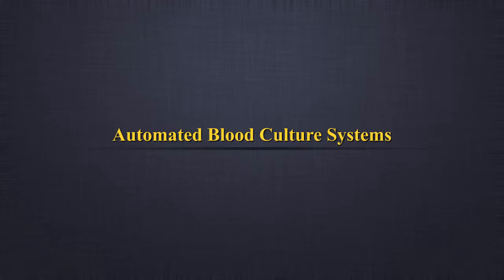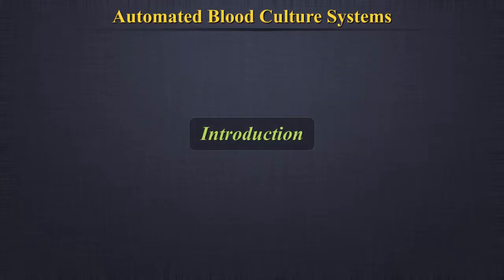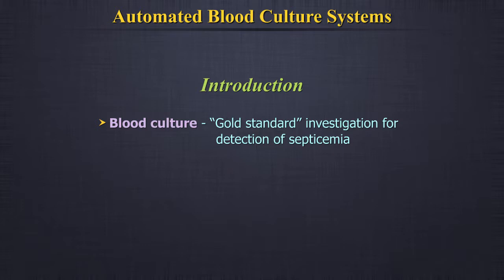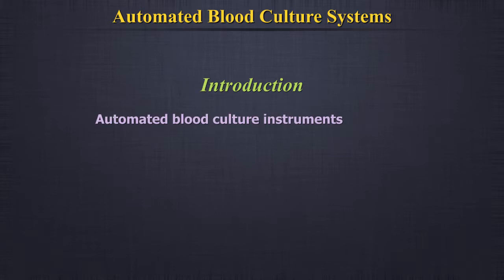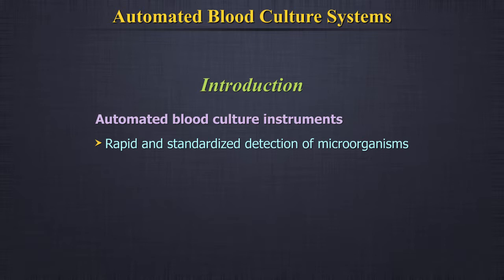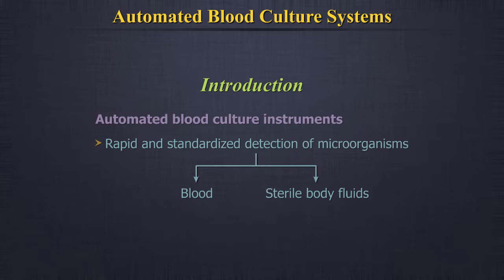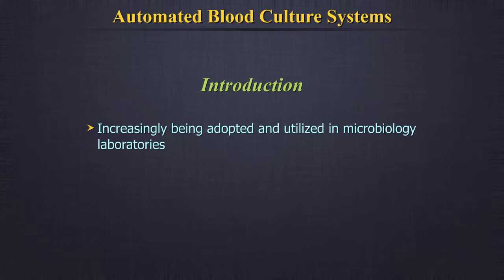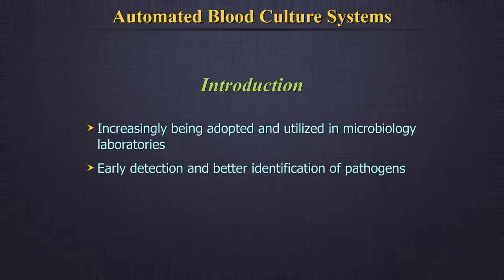Continuous Monitoring Automated Blood Culture Systems — Introduction. Blood culture is considered to be the gold standard investigation for detection of septicemia. The automated blood culture instruments are designed for the rapid and standardized detection of microorganisms in blood and sterile body fluids. With changes in healthcare financing and emphasis on quality, continuous monitoring blood culture systems are increasingly being adopted in microbiology laboratories, leading to earlier detection and better identification of pathogens.